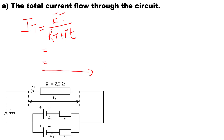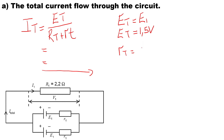Before we can calculate the total current, we must first determine the EMF total. Since these cells are in parallel, EMF stays the same, so EMF total equals 1.5 volts. For internal resistance in parallel, we take the value of one cell — 0.5 ohms — and divide by the number of cells, giving us 0.25 ohms. The external resistance is 2.2 ohms.